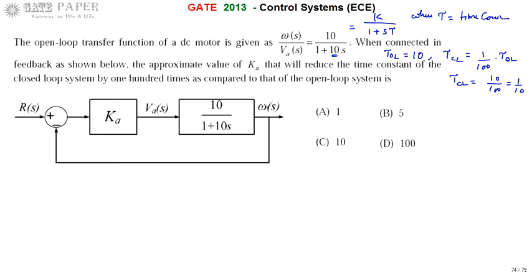We know the closed-loop time constant is 1/10 and we need to calculate Ka. The approach is to express the closed-loop system in standard first-order time constant form — that is, k divided by (1 + s·τ) — and then compare τ with τ_closed_loop.